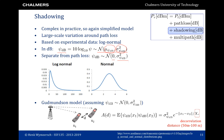We recall that in the dB domain the different effects add up: the received power is the transmitted power plus a path loss factor, shadowing, and multipath. The log-normal distribution is shown on the left-hand side. We note that the log-normal distribution has significant mass close to zero.